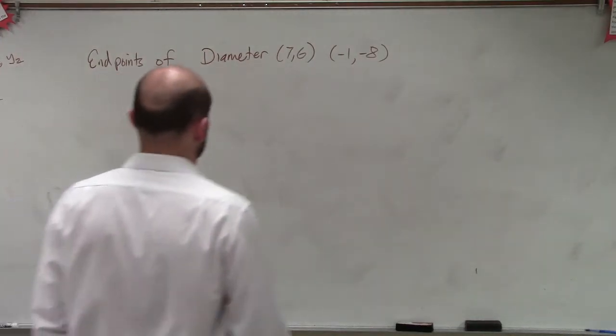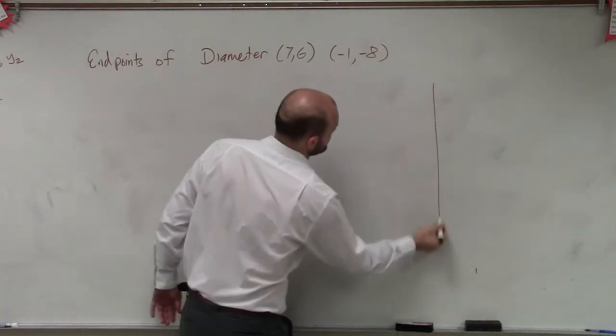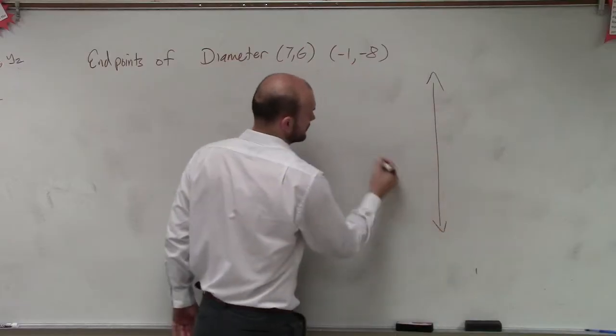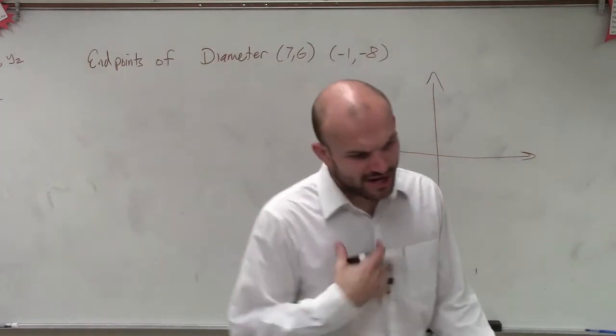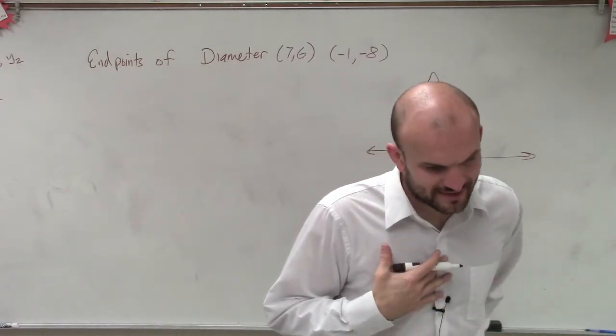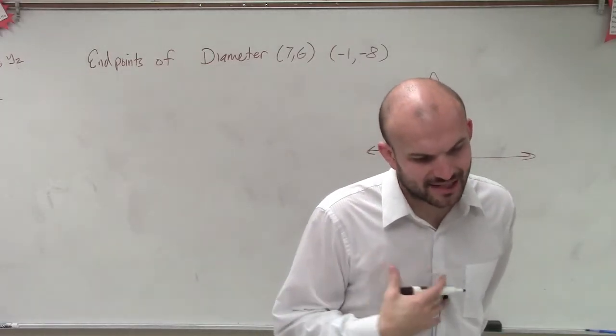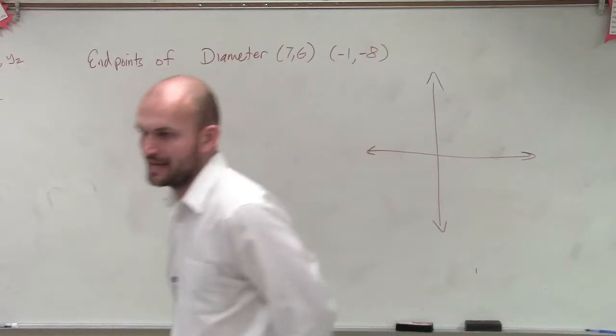Oh, I always write perfectly. What are you talking about? So in this problem, what they're asking us to do is write the equation of the circle if the endpoints of a diameter are at (7,6) and (-1,-8).